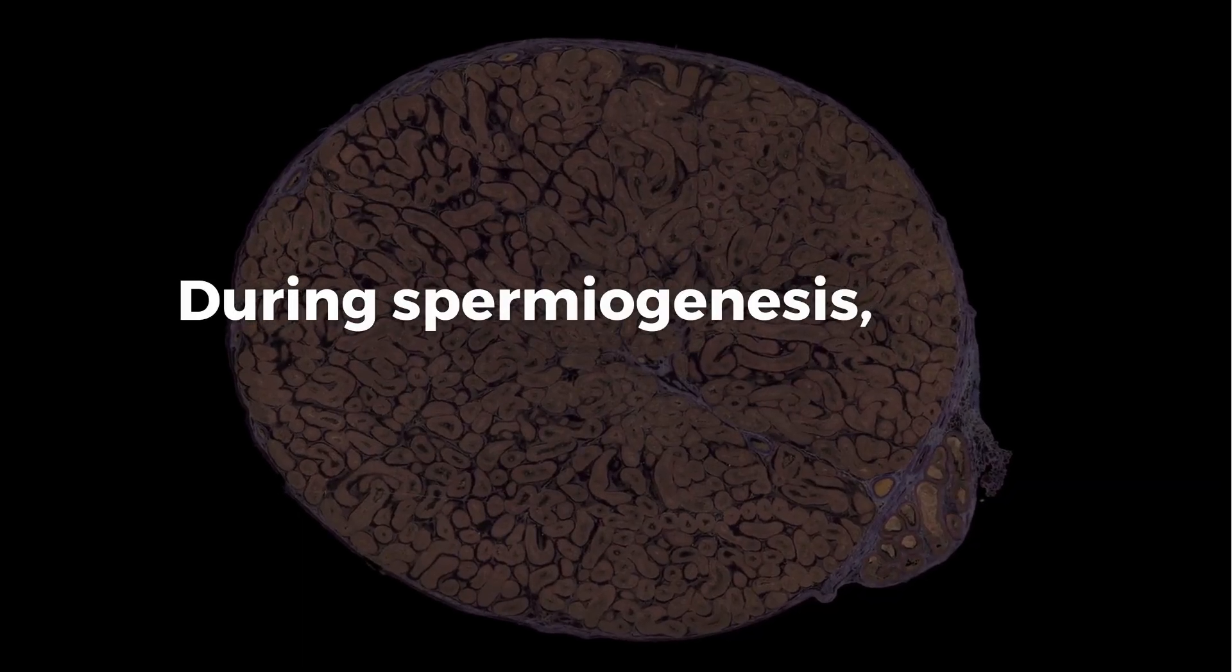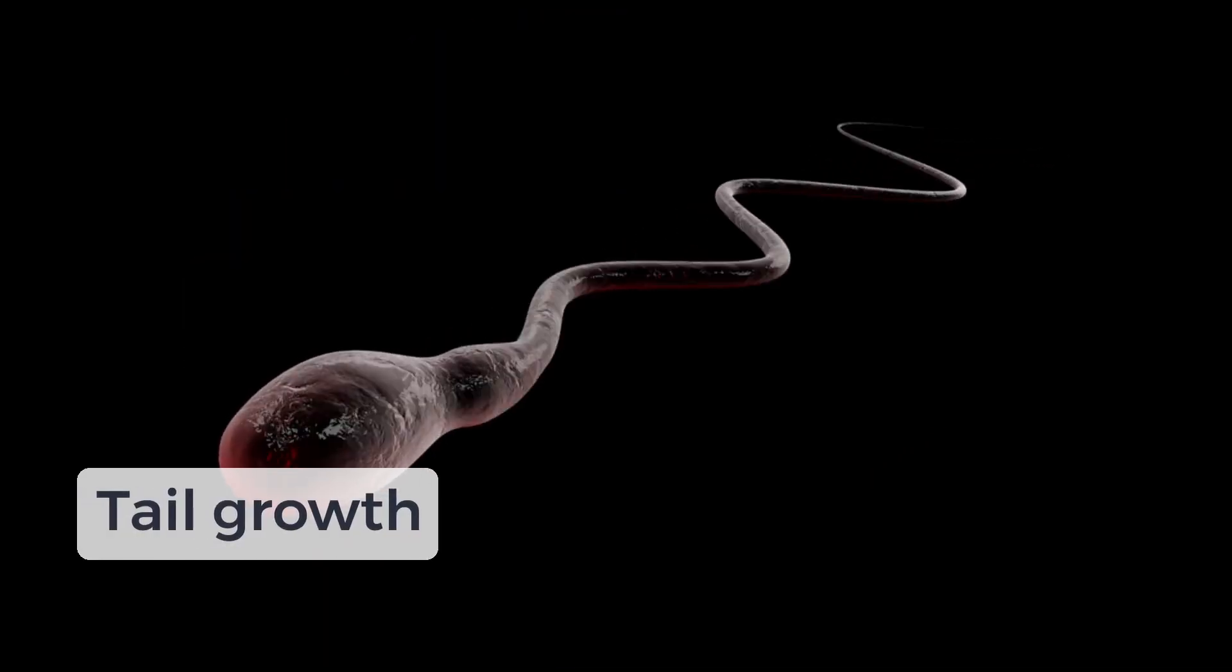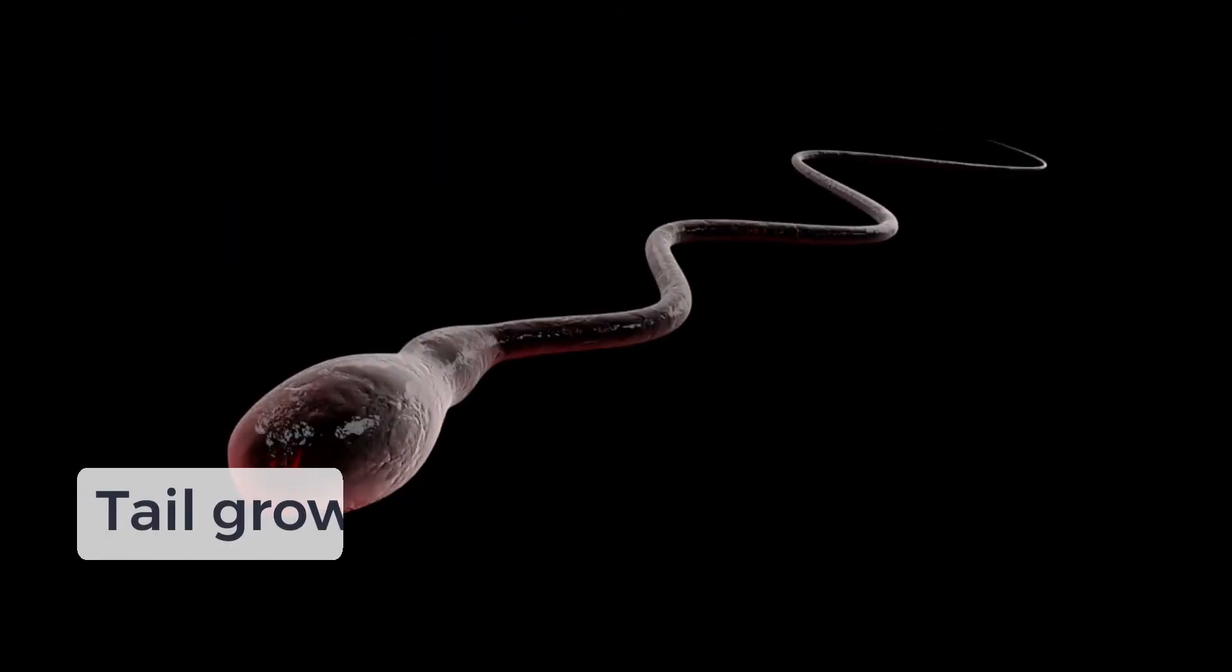During spermiogenesis, these little guys shape up. They start growing tails and condensing their DNA. They get rid of the extra cytoplasm that they don't need and grow a tail.